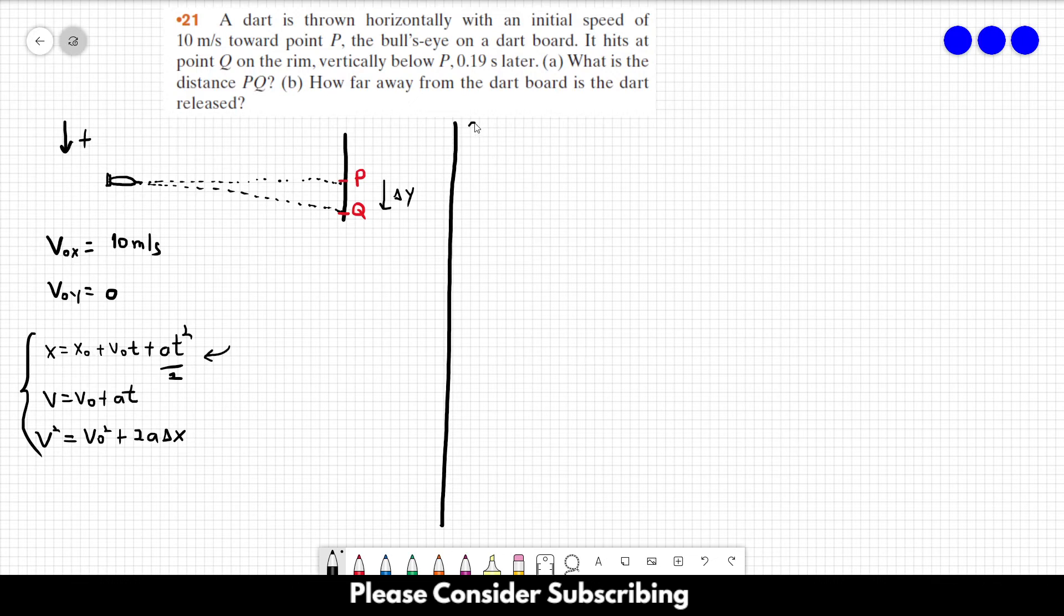Let's write it for the y direction. So it would be y equals y zero plus v zero y t plus a y t squared over 2.